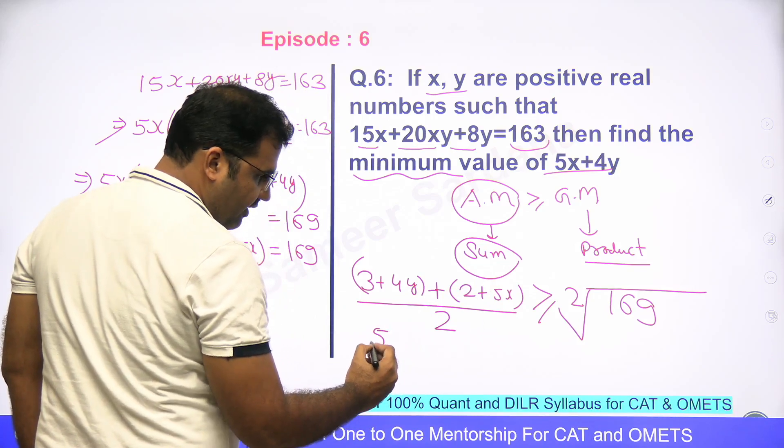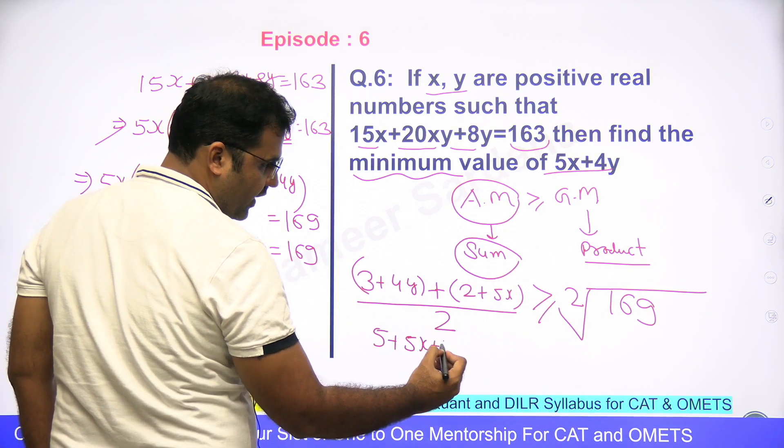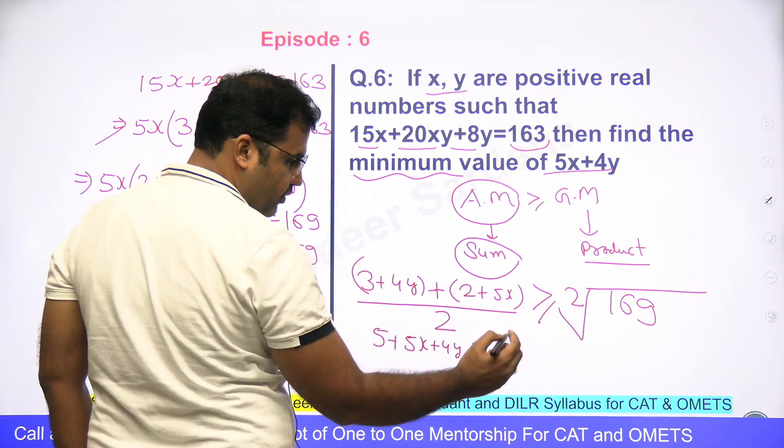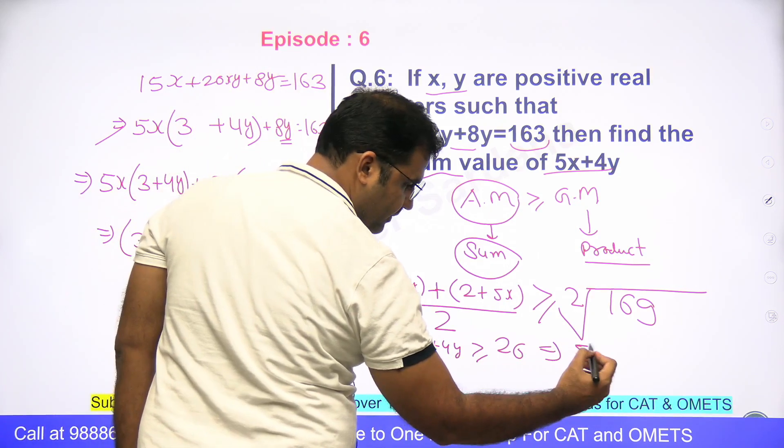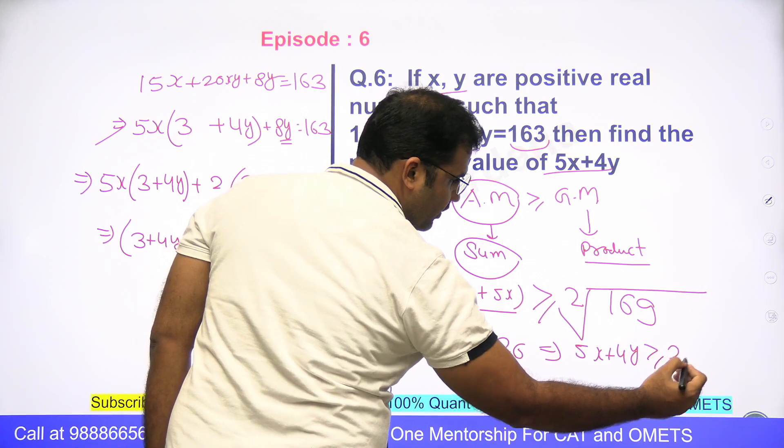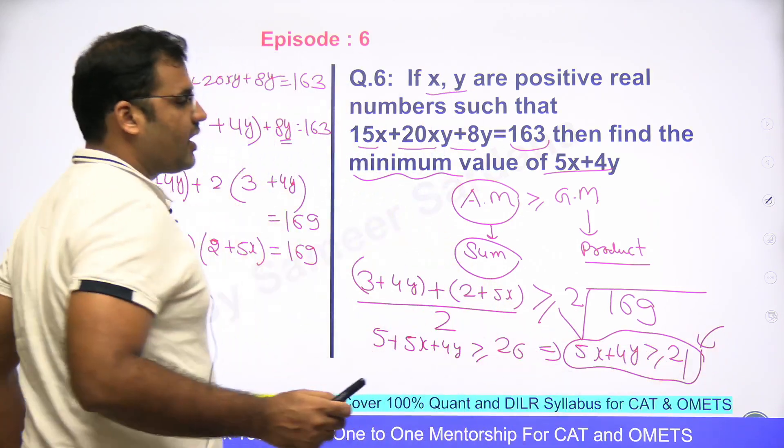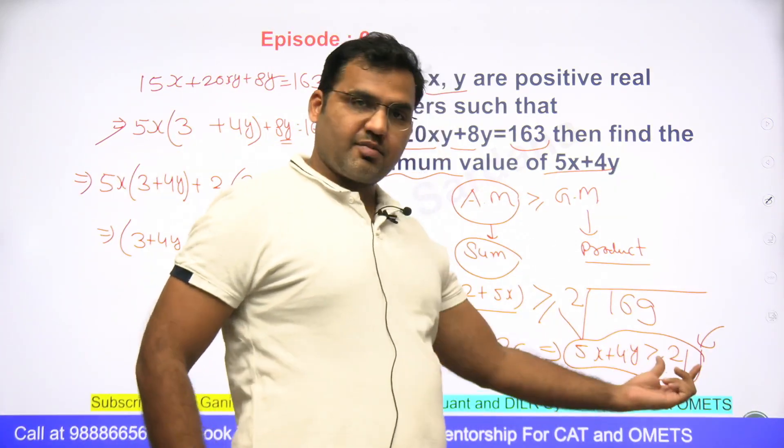Now see this, this is (5+3+2+5x+4y)/2 greater than equal to √169=13, 13×2=26. And here you'll find, 5x+4y will be greater than equal to 21. That means 21 is the minima of this expression. Hence the answer to the question is 21.